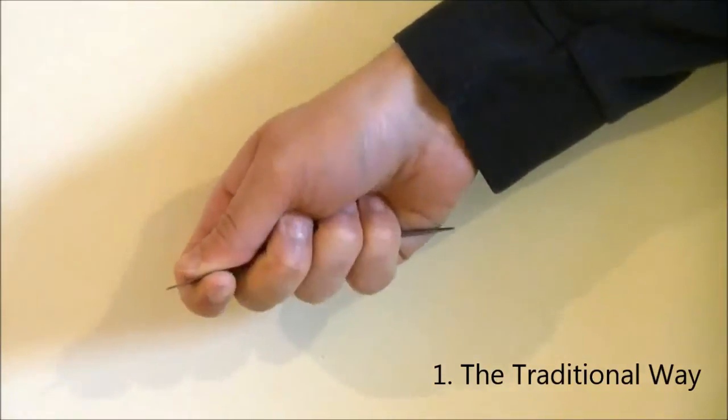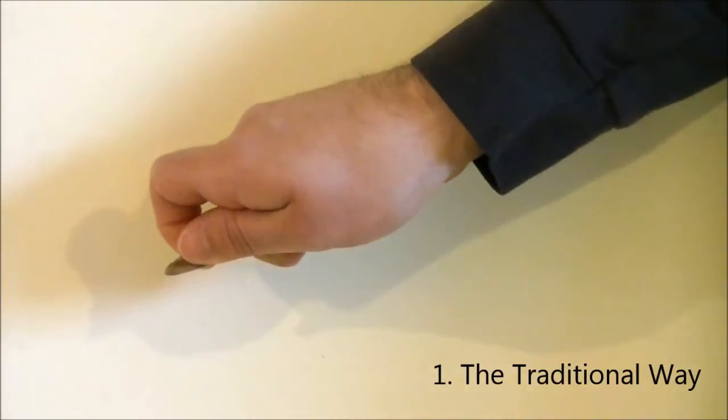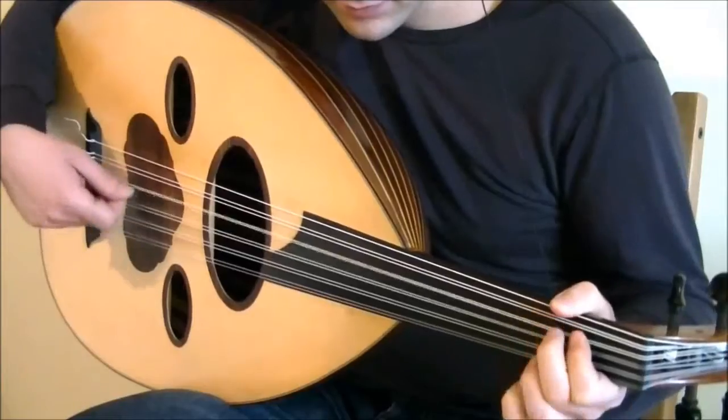Hold on to the risha between your index and thumb. Don't allow too much to stick out and don't allow too little to stick out. The rest of your fingers are curled around the risha and your thumb is curved.